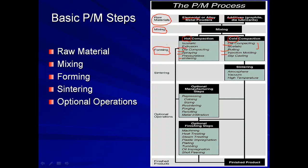Once the cold compaction product is obtained, it is in a green state — it doesn't have sufficient strength and can be broken by hand pressure. The next process, sintering, is carried out using atmospheric or vacuum furnaces at high temperature. However, the temperature is not high enough to convert the metal into liquid form; it is only high enough for surface diffusion to occur, converting mechanical bonds into metallurgical bonds.